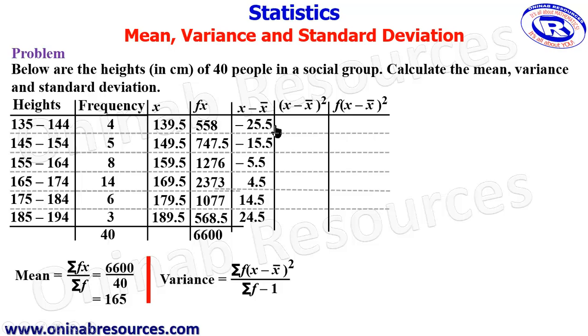So in this column now, we are going to square this. Negative 25.5 squared is 650.25. 15.5 squared is 240.25. 5.5 squared is 30.25. 4.5 squared is 20.25. 14.5 squared is 210.25. Finally, 24.5 squared is 600.25. So that is that for (x - x̄)².